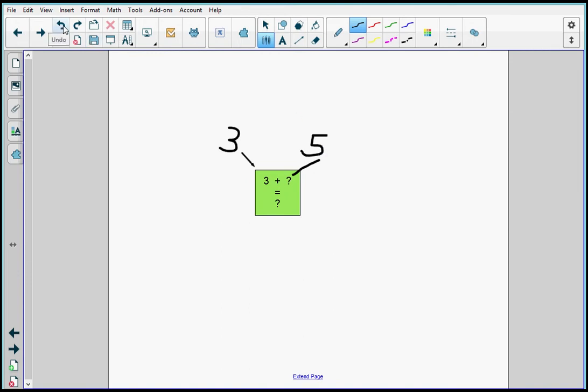Okay and that didn't work so I'm just going to redo it. Draw a line from the five to the block and you can see the five appeared and it gave me the answer eight.